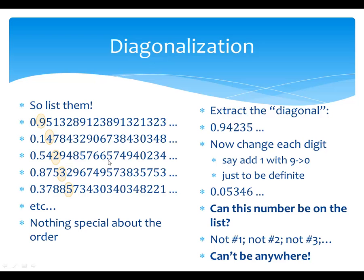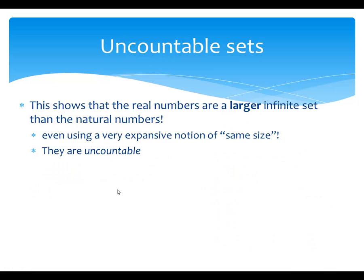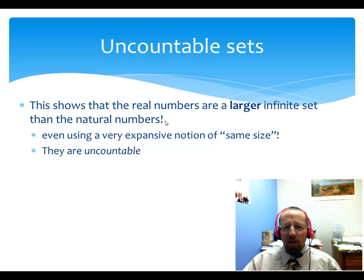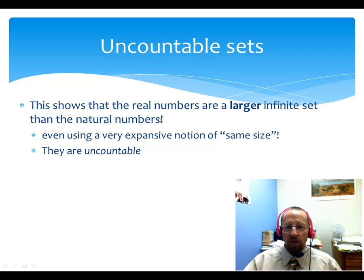That's the contradiction. I thought I was listing every single real number between 0 and 1, and assuming that I did, I actually found a way to create yet a new one. I guess that list couldn't have been complete after all. So this really shows that the real numbers are a strictly larger infinite set than the natural numbers.